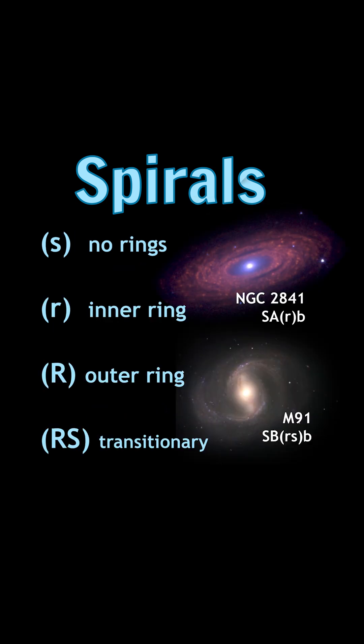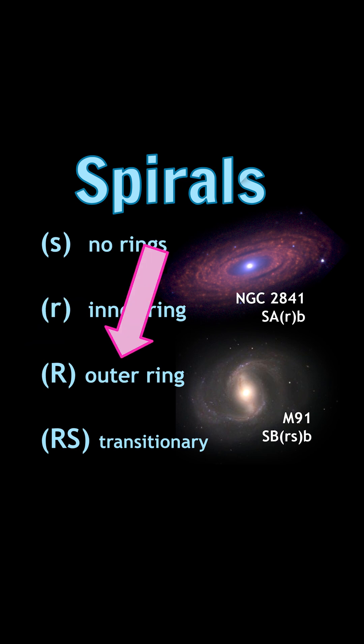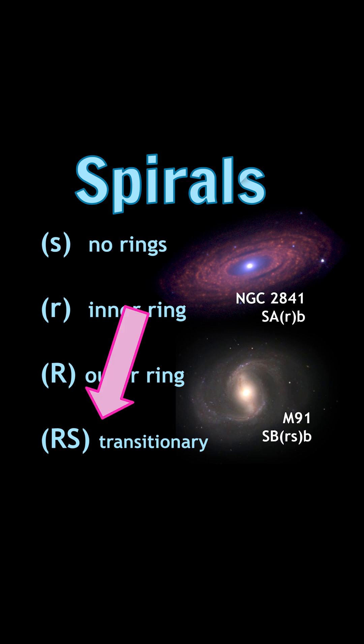Next, we look at if there are any ring structures. If there are none, we add a bracketed S. If there's an inner or outer ring, we add a small r or capital R, respectively. A transitional structure is denoted by bracketed RS.